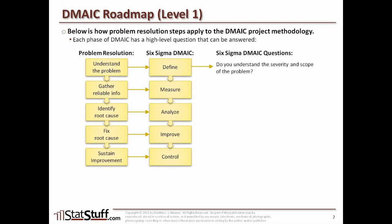Once we can answer that, we move on to the Measure phase, where we're trying to gather reliable information. The question we want to ask at that level is: do you know the potential root causes and have enough reliable data to test those root causes? In the example of Hannah, the doctor suspected strep throat and had to do some tests to see if it was really the root cause for the symptoms. In the same way, in the Measure phase, we want to know whether we've identified potential root causes and gathered data in a reliable and unbiased way so we can trust that data.